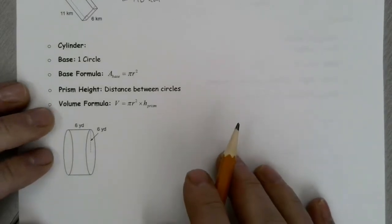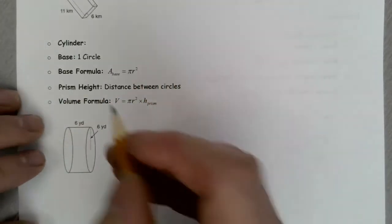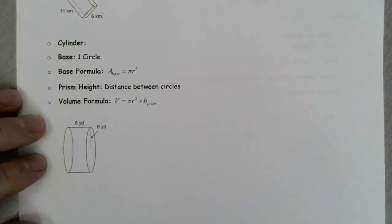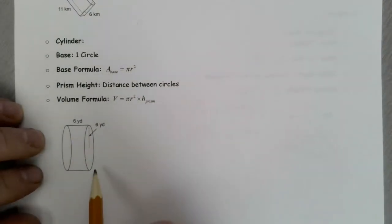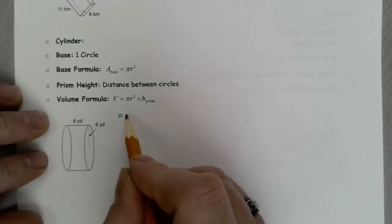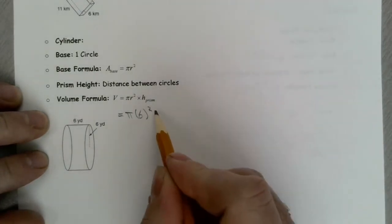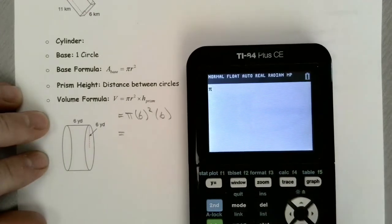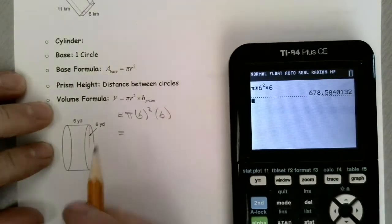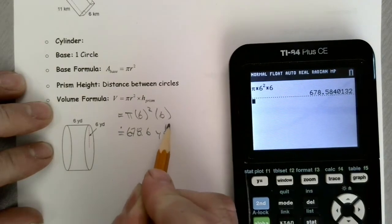Now let's look at the volume of a cylinder. A cylinder has two circular bases, and we multiply the area of the base by the height — the distance between the two circles. In this case it's going to be pi times the radius squared times the height. The radius is 6 yards and the height is also 6 yards, so it's pi times 6 squared times 6 — essentially pi times 6 cubed — which gives approximately 678.6 yards cubed.